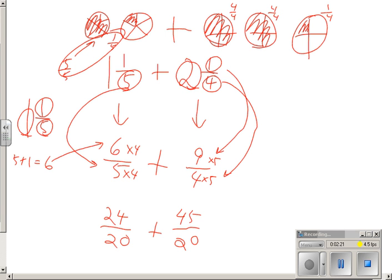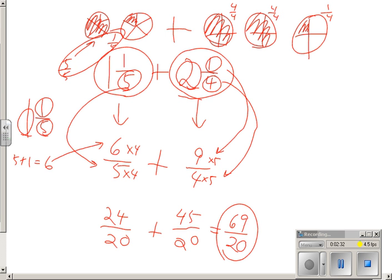Now that I have them together, I have 24/20 plus 45/20 is 69/20. That's my answer, but because I started with mixed fractions, I better go back and change that.